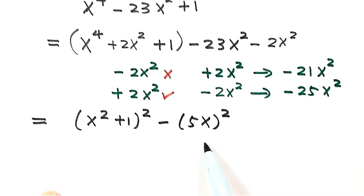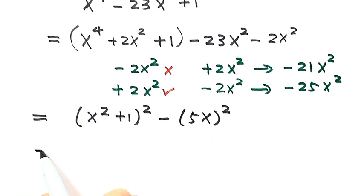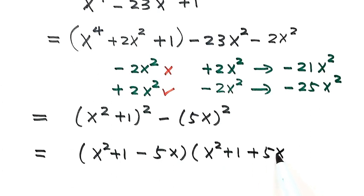Factor the difference of two squares. Then we have (x² + 1 - 5x)(x² + 1 + 5x).